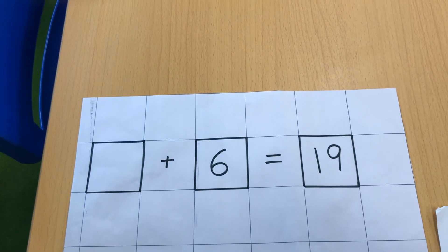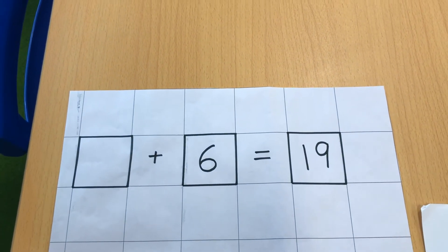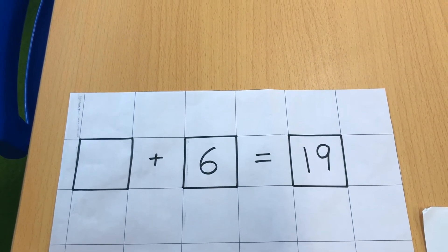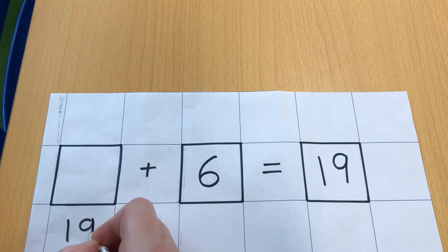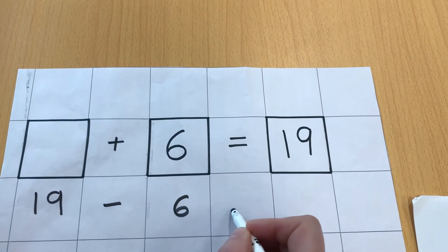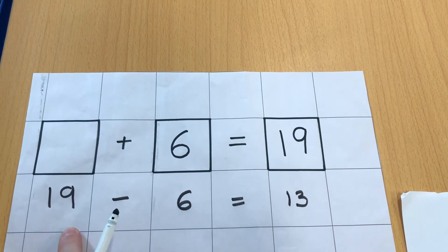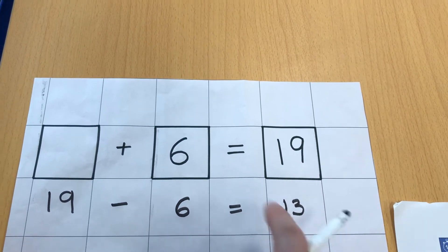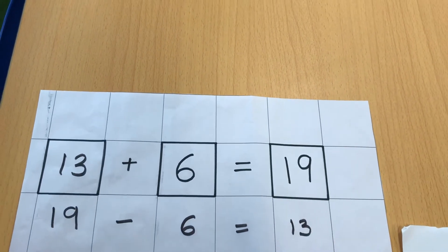Something add 6 is 19. So I can turn my addition into a subtraction to find the answer. So I'm going to start with 19, my bigger number, and I'm going to take away 6. And my answer will be 13. So if 19 take away 6 is 13, 13 add 6 must be 19.